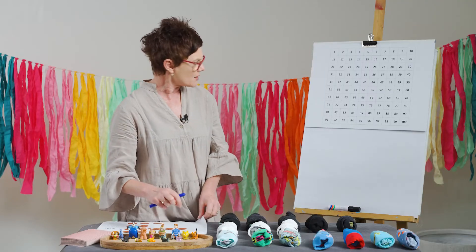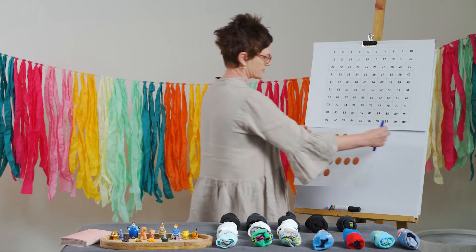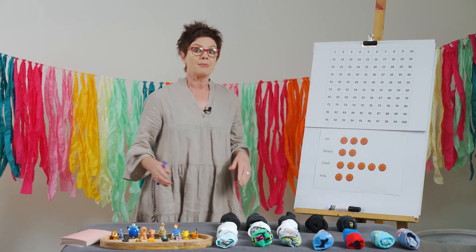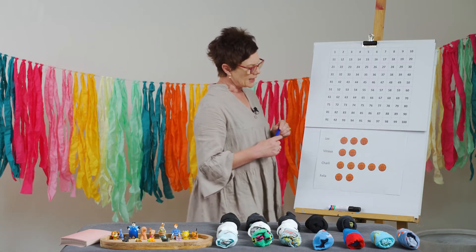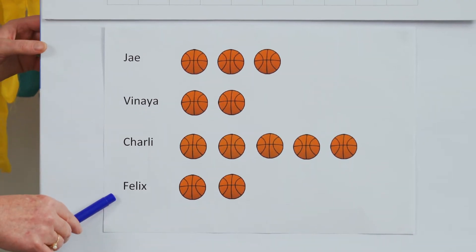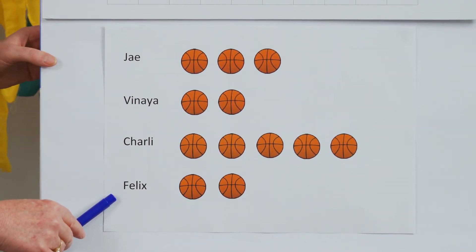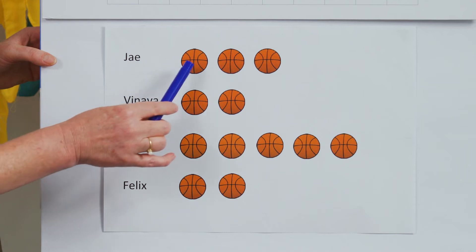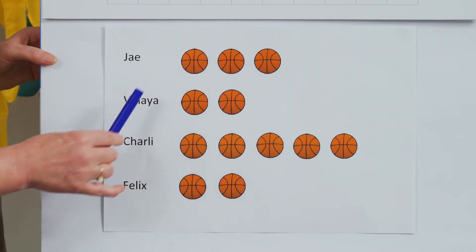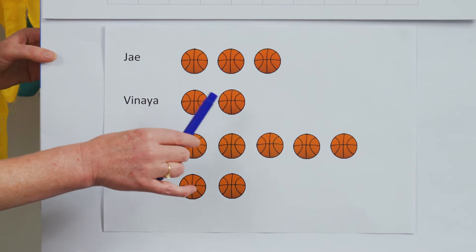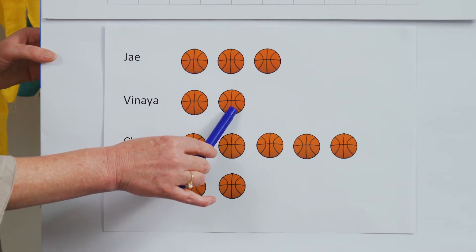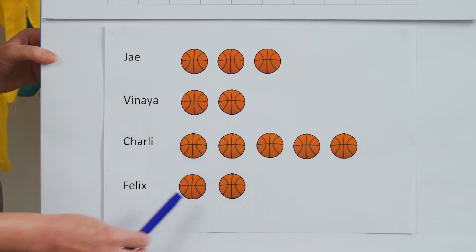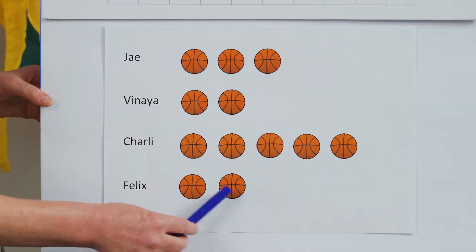My second data set looks like this — another one of my favourite topics: basketball. We have four friends that have been playing games of basketball and they can remember a certain amount of games played. Jay has played three games, Vinara has played two games, Charlie five, and Felix two.